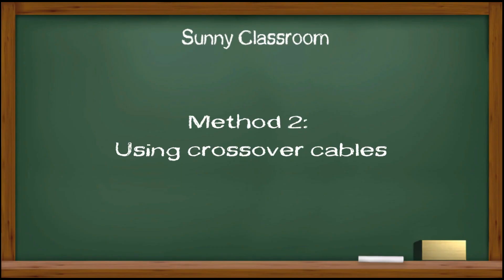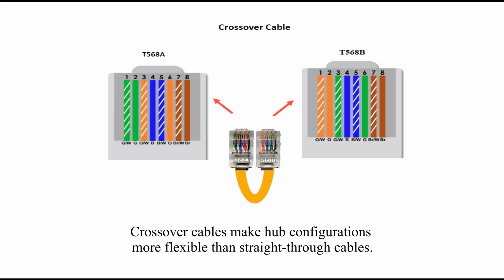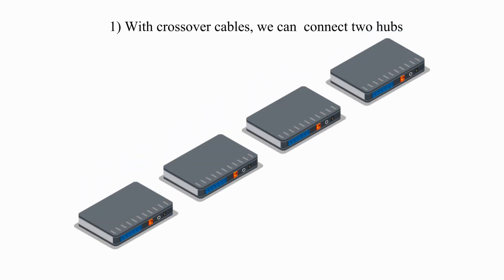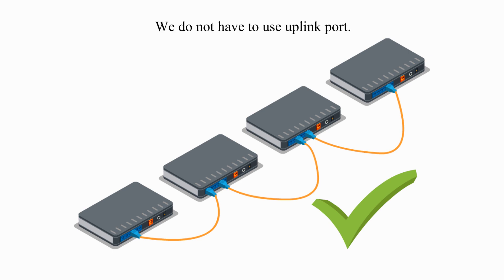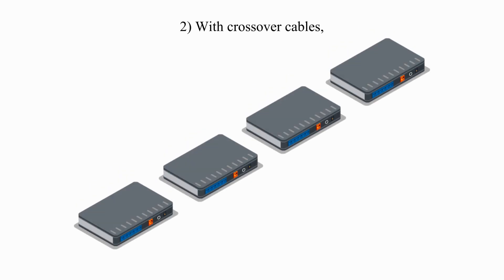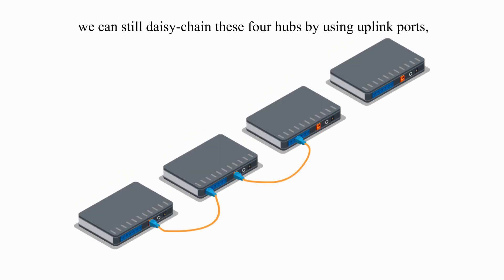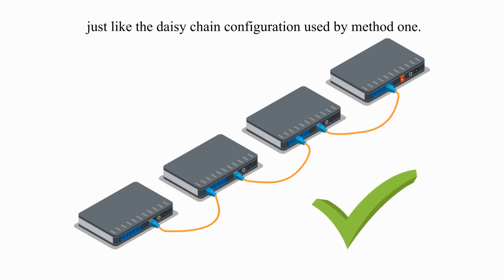The second method uses crossover cables. Crossover cables make hub configurations more flexible than straight-through cables. One, with crossover cables, we can connect two hubs by using a regular port on each hub — we do not have to use the uplink port, and a hierarchical tree configuration will work. Two, with crossover cables, we can still daisy chain these four hubs by using uplink ports, just like the daisy chain configuration used by method one.